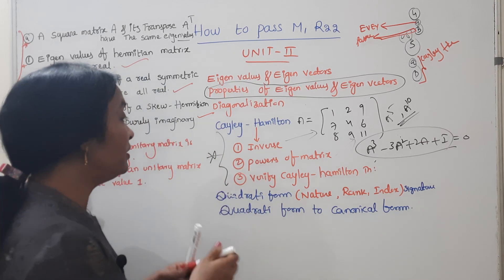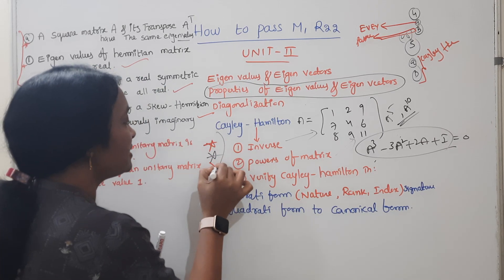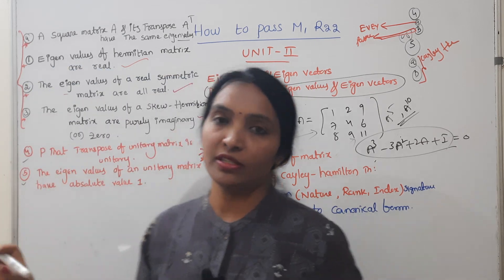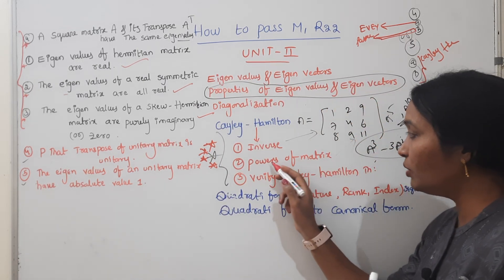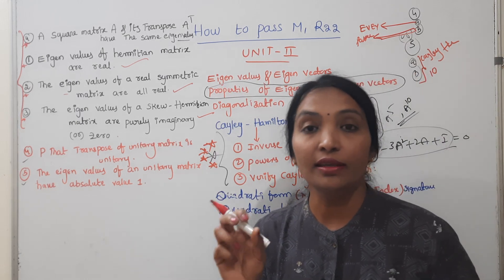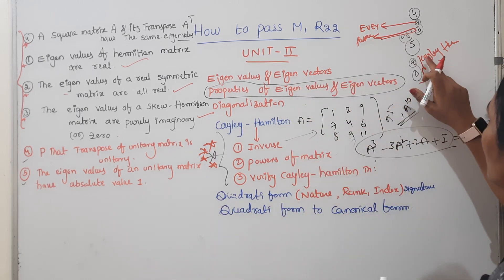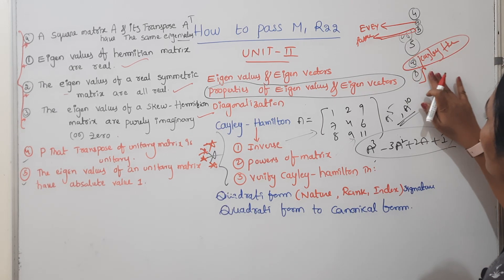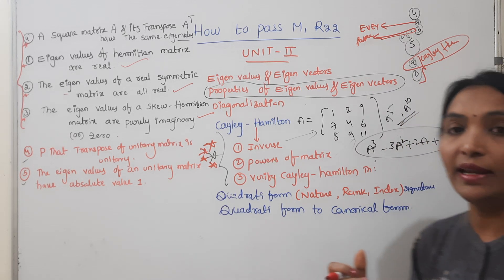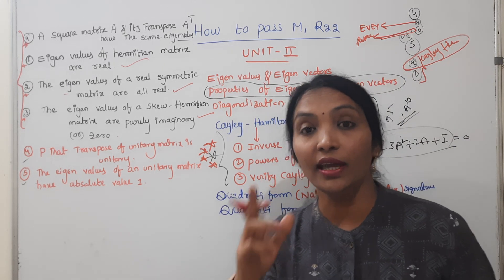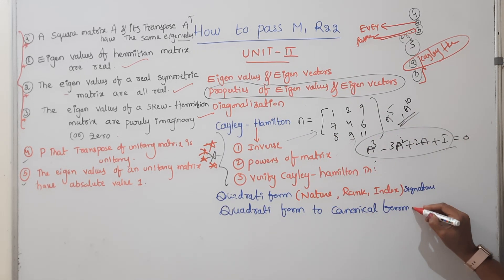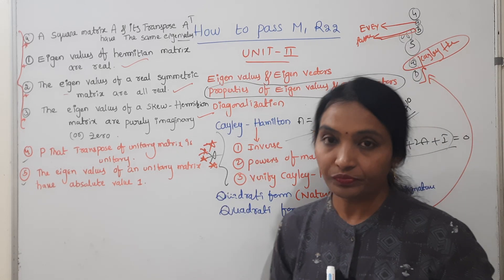This is a double or triple star — five star question. But it is a big question. Everyone is missing it. Maximum problem. There are 10 marks here. Two possibilities are possible: one way is simple for Cayley-Hamilton. I expect this. If you have 10 marks, it is a long question. One possibility is quadratic form to canonical form.